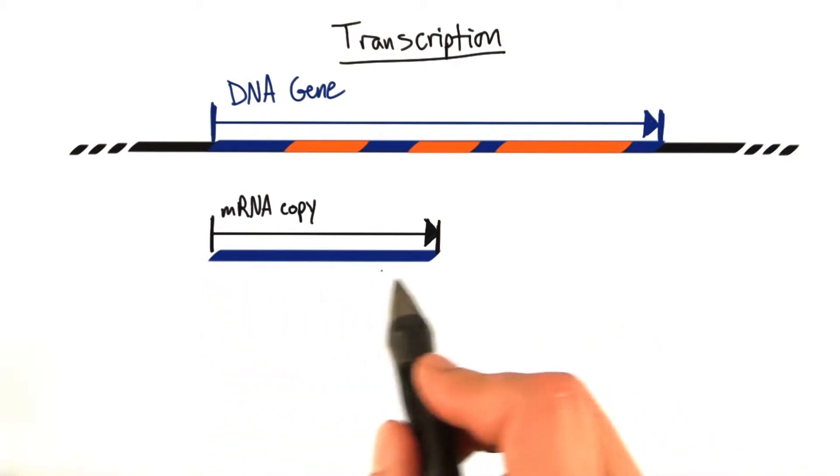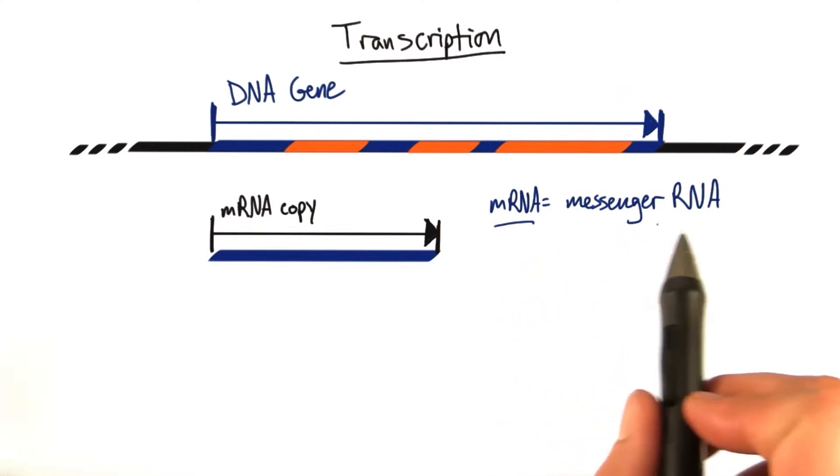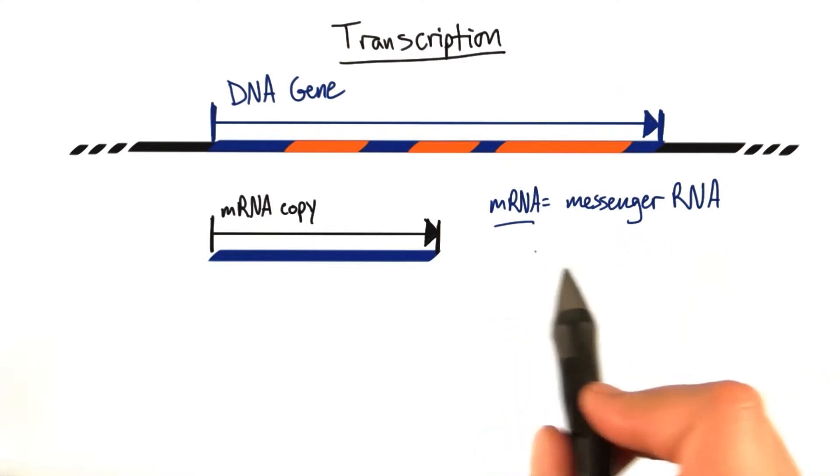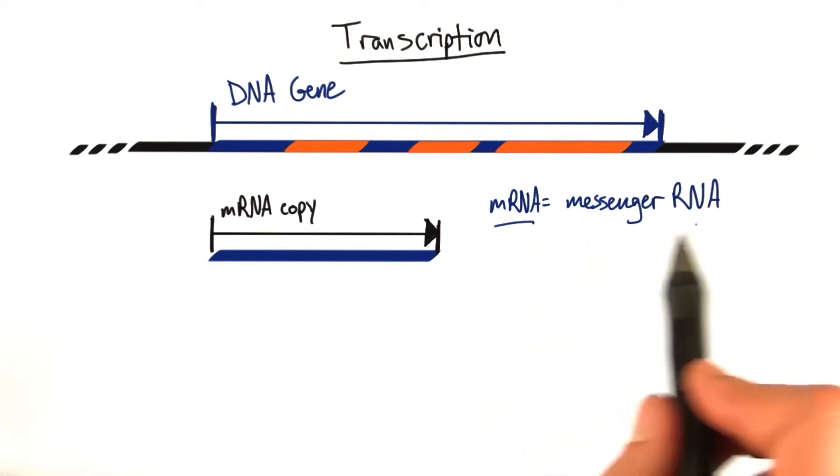The RNA copy is actually called an mRNA copy. mRNA means messenger RNA. It turns out that RNA serves many purposes in a cell. And so there are lots of prefixes for RNA that distinguish what it can do. And the most important one for us is this messenger status.